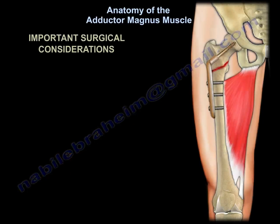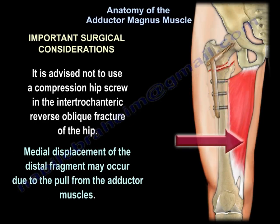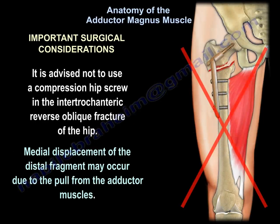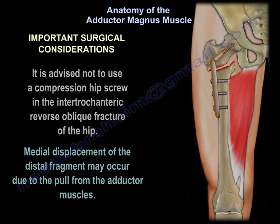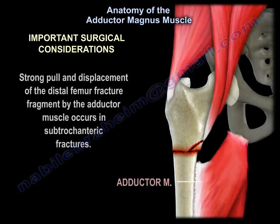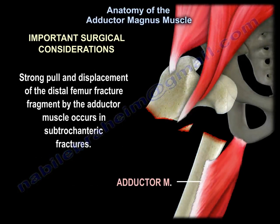Important surgical consideration: it is advised not to use a compression hip screw in the intertrochanteric reverse oblique fracture of the hip. Medial displacement of the distal fragment may occur due to the pull from the adductor muscles. Strong pull and displacement of the distal femur fracture fragment by the adductor muscle also occurs in subtrochanteric fractures.